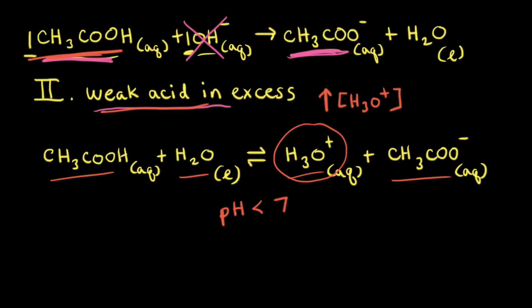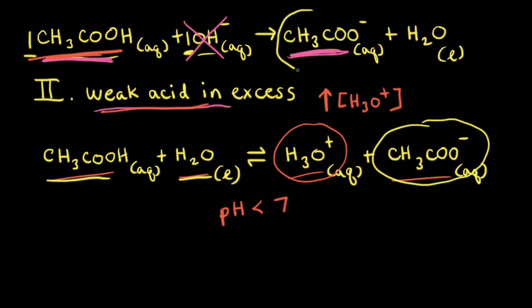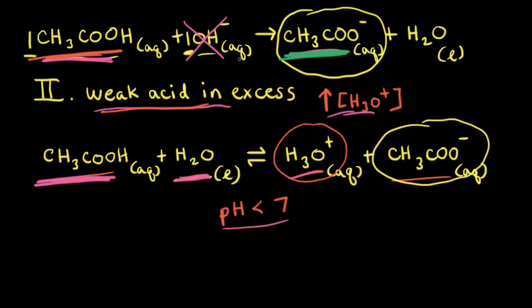If our goal is to calculate the actual pH, our first thought would be that this is a weak acid equilibria problem — and it is. However, there are two sources of the acetate anion: one from the reaction of acetic acid with water, and another from the acid-base neutralization reaction. Therefore, one way to think about this problem is as a common ion effect problem, where the common ion is the acetate anion. The presence of a common ion decreases the ionization of acetic acid in water; however, the concentration of hydronium ions will still increase, so the pH will be less than 7. Another way to think about it: when we formed the acetate anion from the neutralization reaction and had some weak acid in excess, a buffer solution forms — so we could use the Henderson-Hasselbalch equation to calculate the pH.